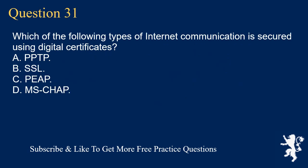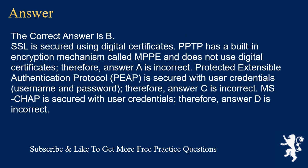Question 31. Which of the following types of internet communication is secured using digital certificates? A. PPTP. B. SSL. C. PEAP. D. MSCHAP. The correct answer is B. SSL is secured using digital certificates. PPTP has a built-in encryption mechanism called MPPE and does not use digital certificates. Therefore, answer A is incorrect. Protected Extensible Authentication Protocol (PEAP) is secured with user credentials — username and password. Therefore, answer C is incorrect. MSCHAP is secured with user credentials. Therefore, answer D is incorrect.